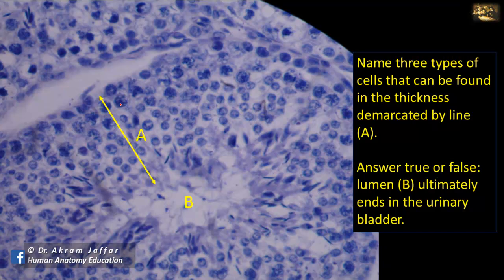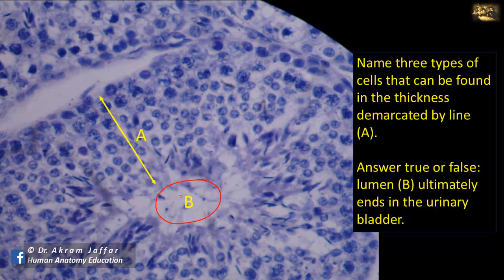This is a section in the testis showing a seminiferous tubule. The cells of the spermatogenic series include spermatogonia, primary spermatocytes, secondary spermatocytes, and spermatids, with Sertoli cells in between. The statement that lumen B of the seminiferous tubule ultimately ends in the urinary bladder is false — lumen B leads to the epididymis, then the vas deferens, which unites with the duct of the seminal vesicle to form the ejaculatory duct, which opens into the prostatic urethra.